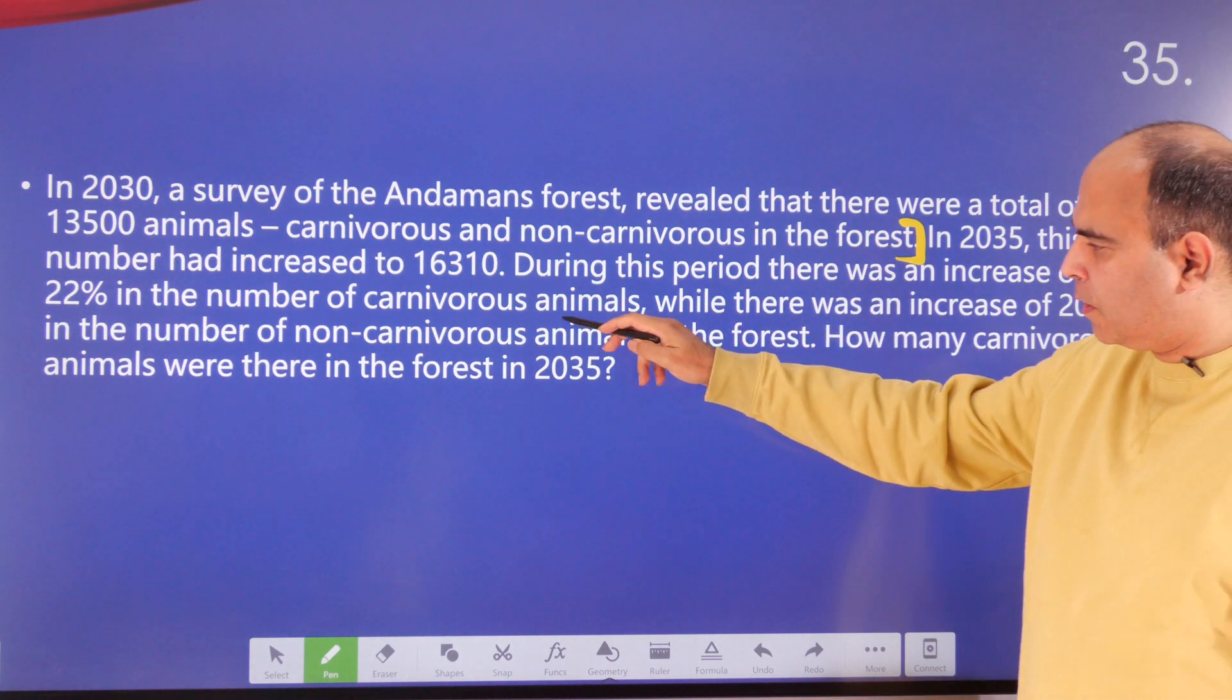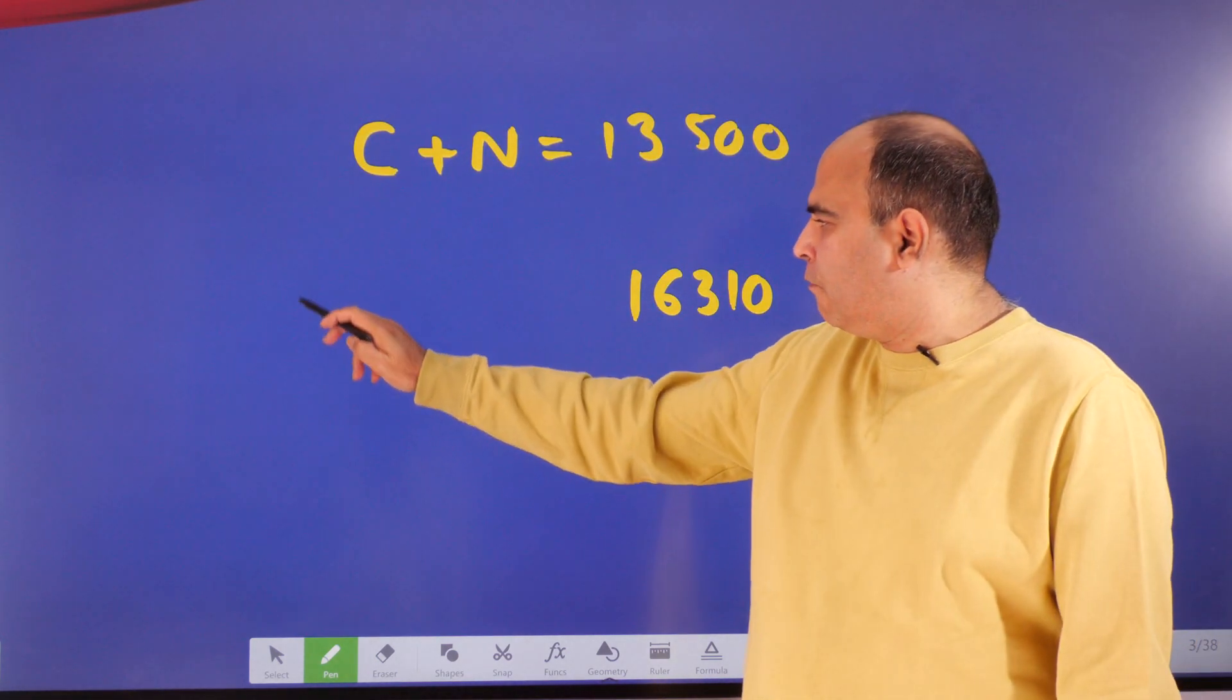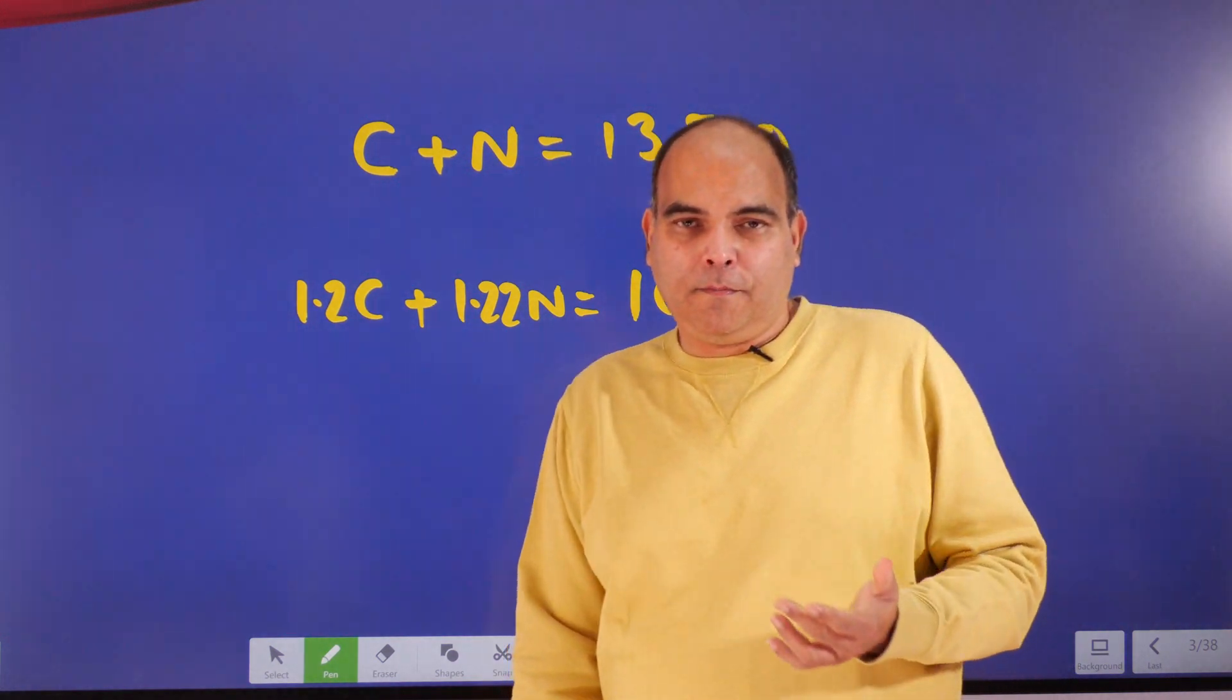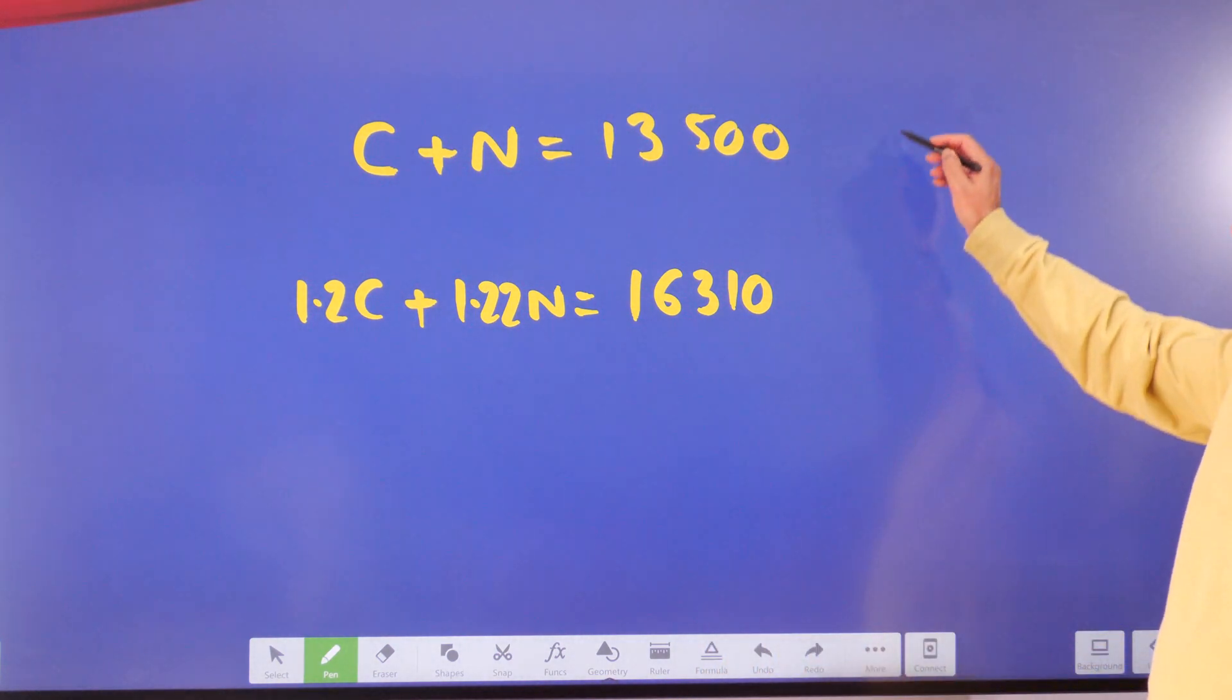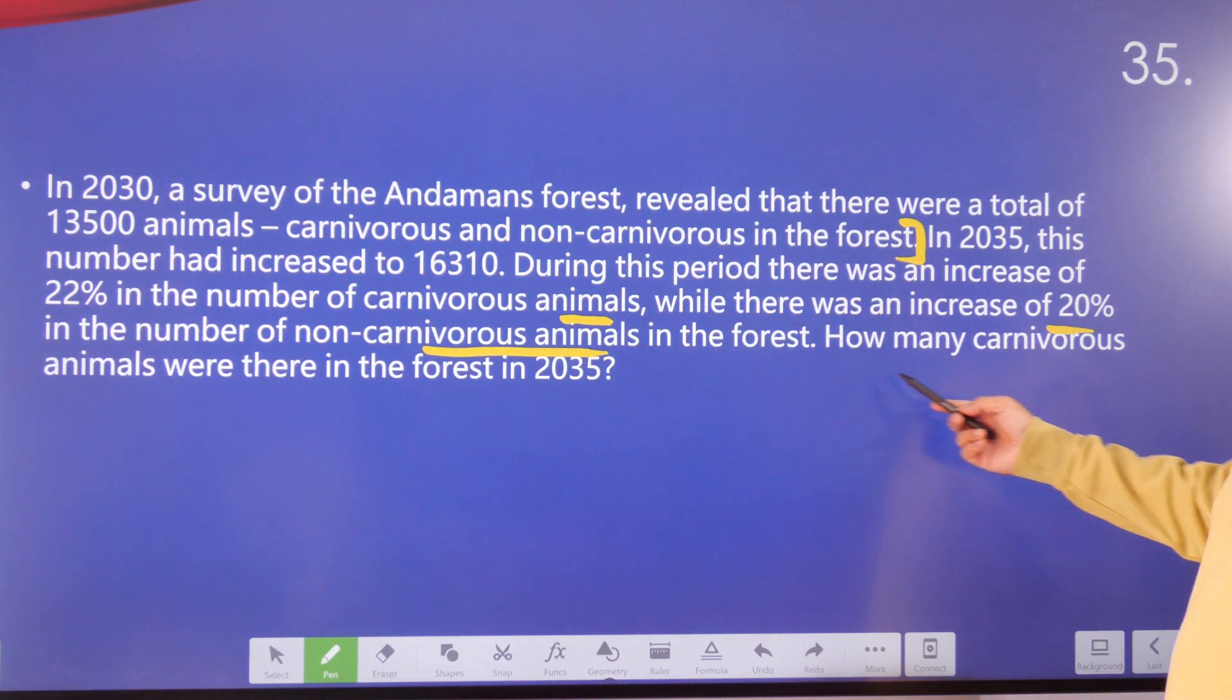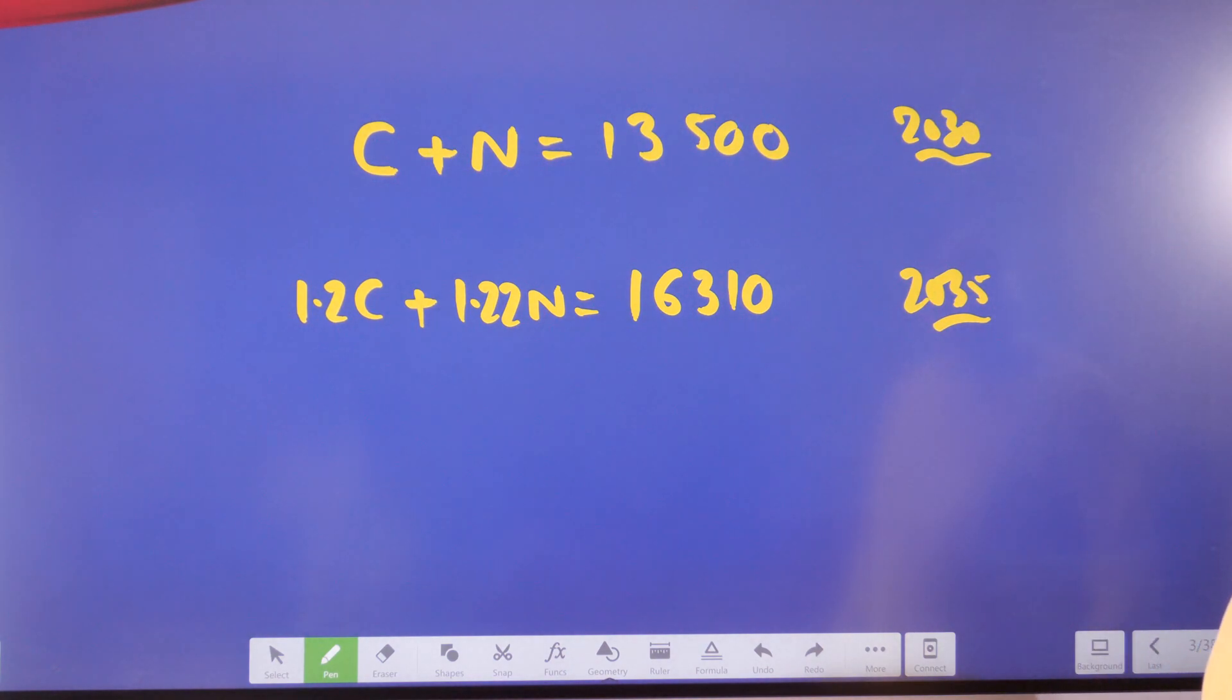During this period, there is an increase of 22% in carnivorous animals each year, so that means you have 1.22C. And an increase of 32%—actually, I think I wrote it wrongly—there was an increase of 22% in carnivorous animals while there was an increase of 20% in non-carnivorous animals. So the equation is 1.22C + 1.2N = 16,310. It's pretty much a simple situation. The question will ask you how many carnivorous and non-carnivorous animals there were either in 2030 or in 2035. The question is asking: how many carnivorous animals were there in the forest in 2035?